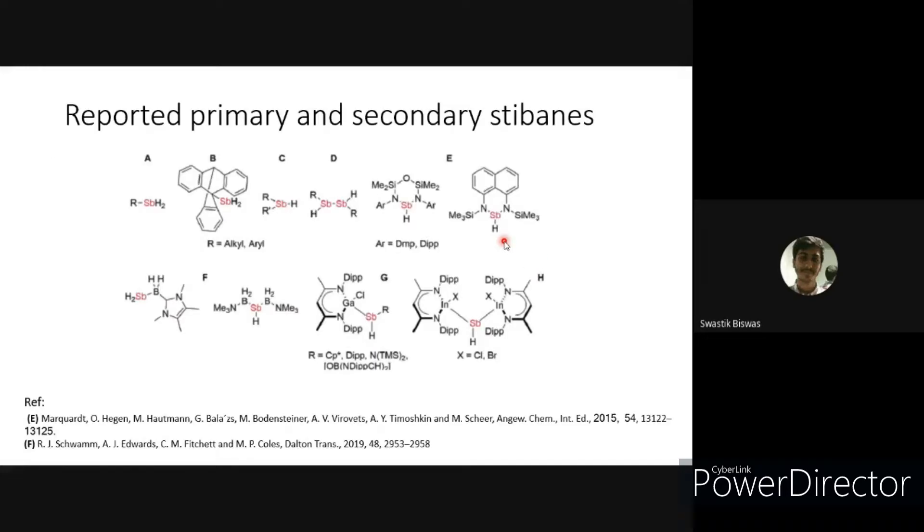Group 15 elements like ammonia, phosphine and arsine can be purchased and stored in gas cylinders. But stibane needs to be synthesized precisely prior to use under exclusion of light and low temperature, which renders the gas quite unattractive as a reaction reagent.